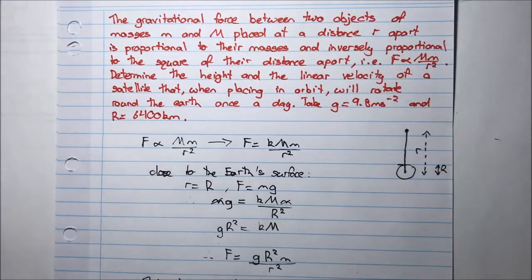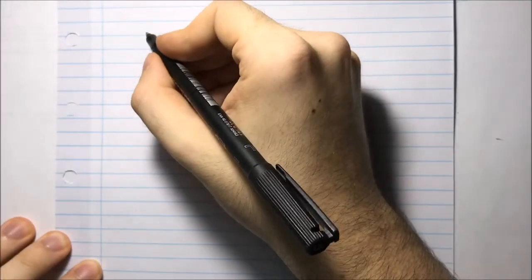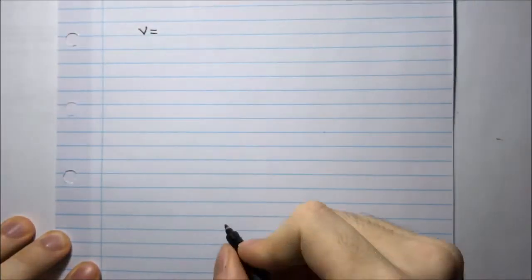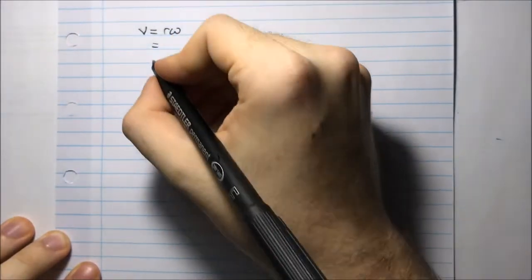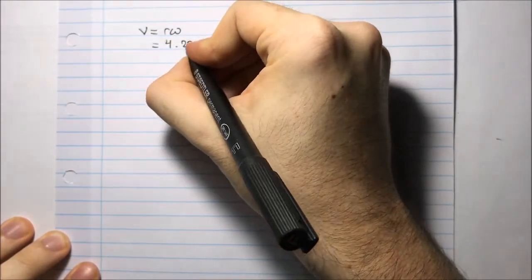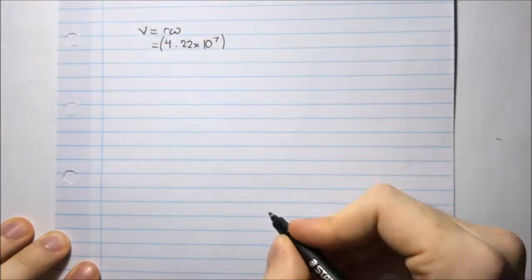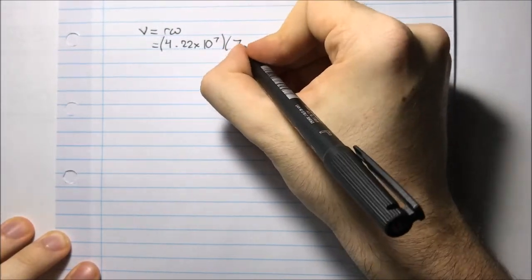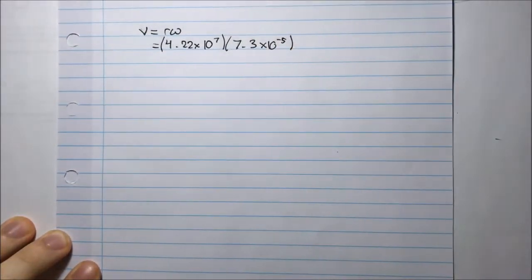The last bit to do in this question is to work out the linear velocity of the satellite. The expression for the linear velocity is given by V equals R omega. R is 4.22 times 10 to the 7 meters. And for our omega, that was 7.3 times 10 to the negative 5 radians per second.